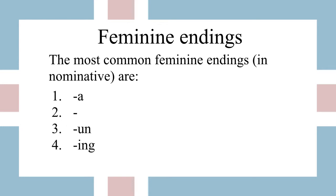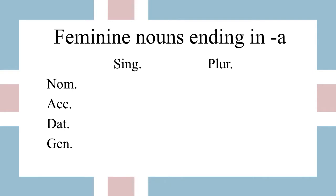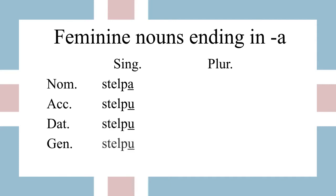So let's take these one at a time. First of all, feminine nouns ending in a — these are very common. The nominative form ends in an a, like stelpa, which means girl. For feminine nouns ending in a, the accusative, dative, and genitive singular all take the same form, which is stelpa, stelpa, stelpa.